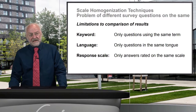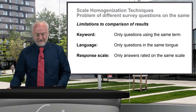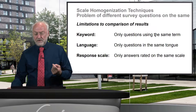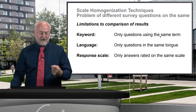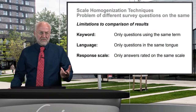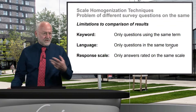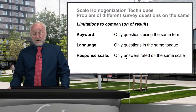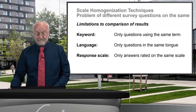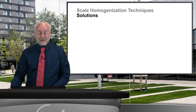The problem is that if you want to compare — for instance, whether people in one country are happier than in another — you should have exactly the same question. The keyword should be the same, ideally people should use the same mother language, and answers should be rated on the same scale, otherwise you cannot compare. These are the problems — let's now look at the solutions.